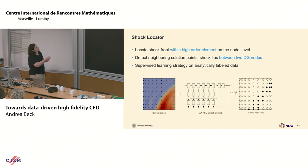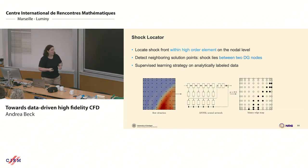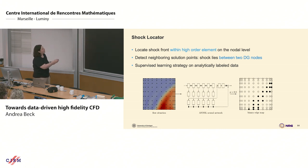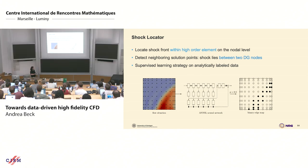A single DG element would look like this. Those dots are the inner collocation points — think of interpolation points. They are not evenly spaced; they follow a Gaussian distribution because we like good interpolation and integration properties. The idea is that from analytical data, we know where our shock fronts are. Can we train a neural network that tells us not just that a shock is somewhere in an element, but precisely where it is?